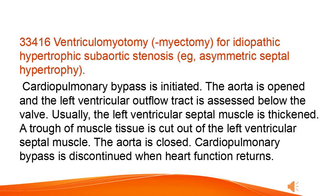Ventriculomyotomy/myectomy for idiopathic hypertrophic subaortic stenosis, e.g., asymmetric septal hypertrophy. Cardiopulmonary bypass is initiated. The aorta is opened and the left ventricular outflow tract is assessed below the valve. The left ventricular septal muscle is typically thickened; a trough of muscle tissue is cut out of the left ventricular septal muscle. The aorta is closed and cardiopulmonary bypass is discontinued when heart function returns.